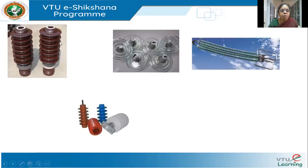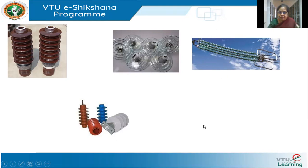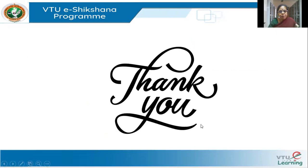The first brown one you see is porcelain. The transparent insulator is toughened glass. And here you find a string — this is silicone. Silicone can also come in different light shades. Silicone is really preferred because of its aesthetics. We saw about the insulating materials, and in the next session, we will see more about the insulator design. Thank you.